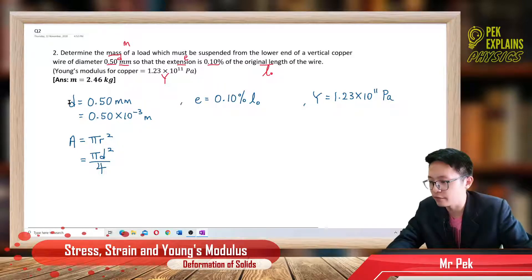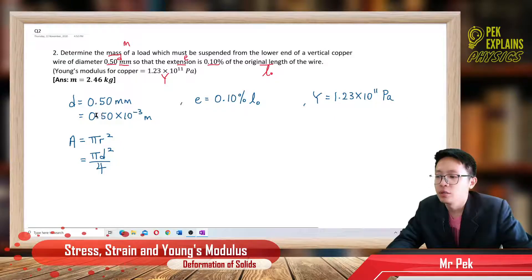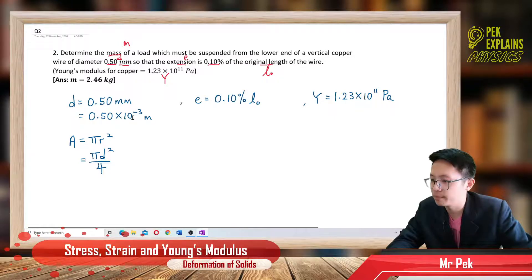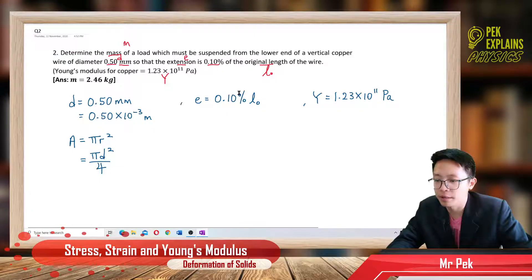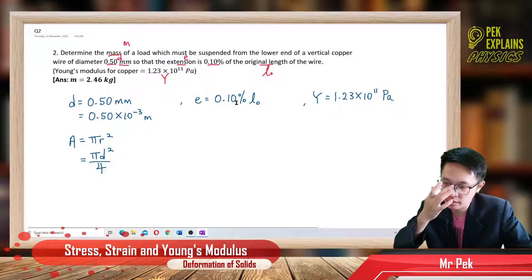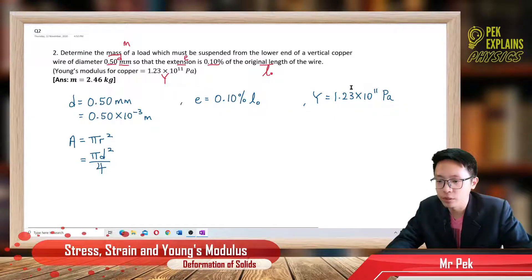So this is the information given. The diameter is 0.5 mm, so you must change to meters — mm is 10 to the negative 3. The extension is 0.1% of the original length. The Young's modulus is given in Pascal, which is already SI unit, so no need to convert.